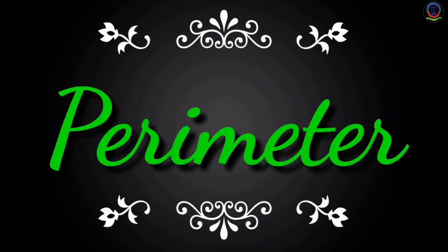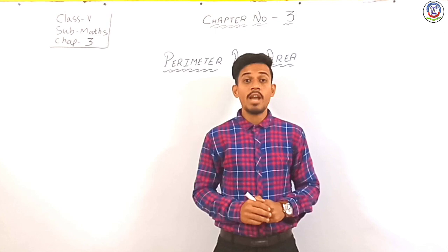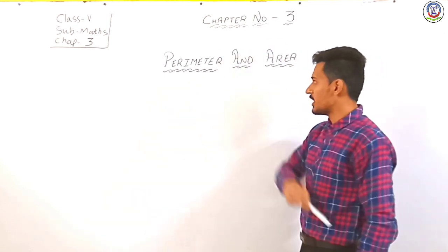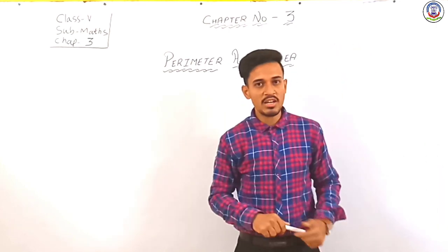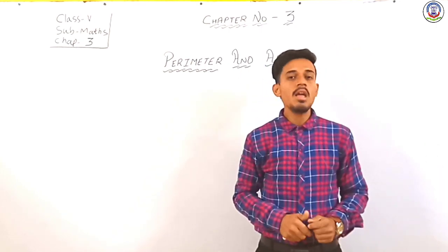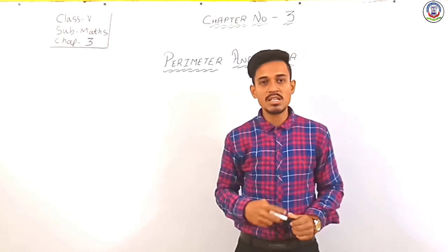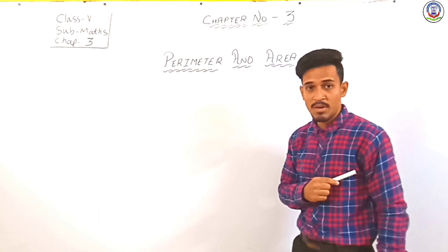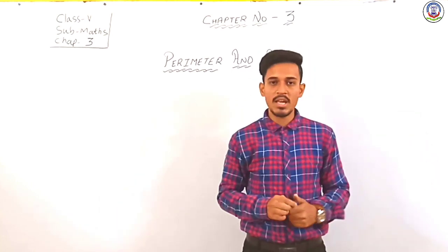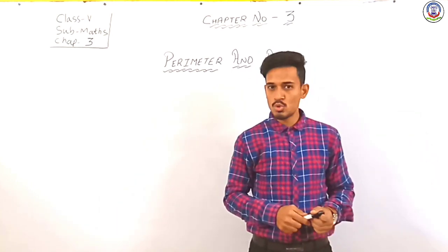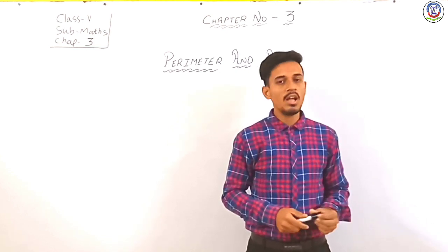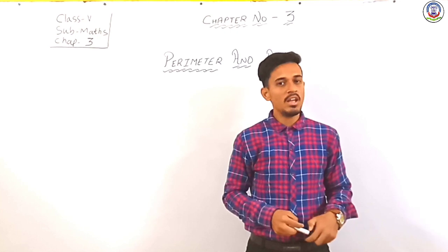In this lecture, we discuss about perimeter. We start Chapter number 3, which is Perimeter and Area. In this chapter, we learn about perimeter and area. In this topic, we learn about perimeter of rectangle, perimeter of square, area of rectangle, area of square, and area of triangle.